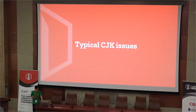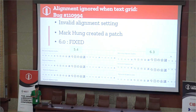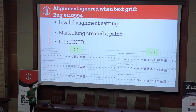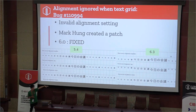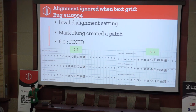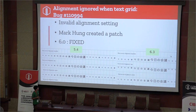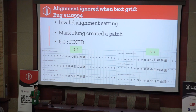One typical CJK issue is alignment with ignore grid. In version 5.4, alignment was not working, but in 6.3 it is working. This was fixed — it succeeded with the correct setting. This is a Mac patch.